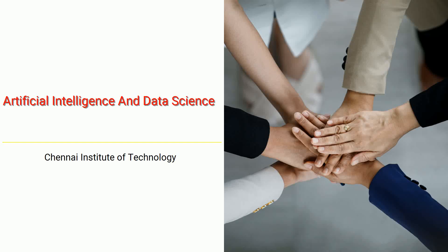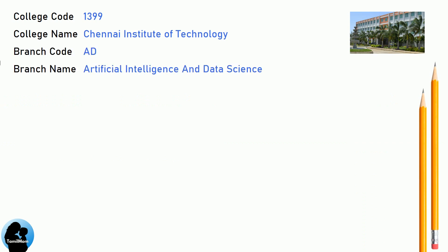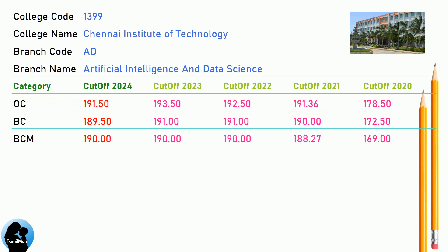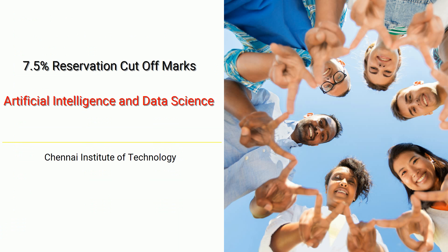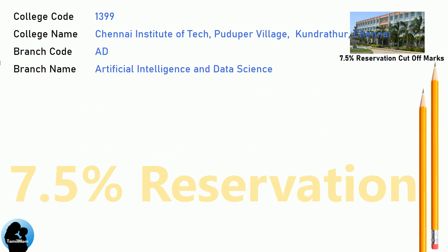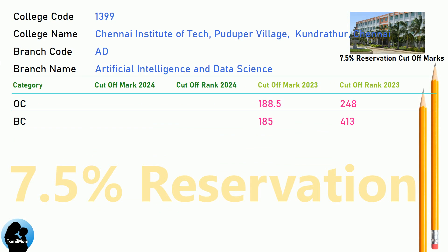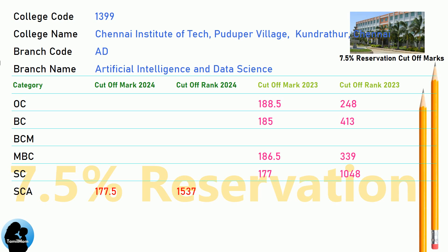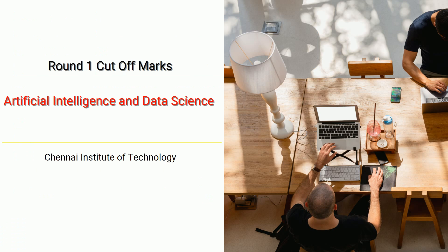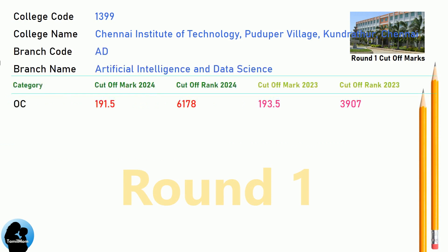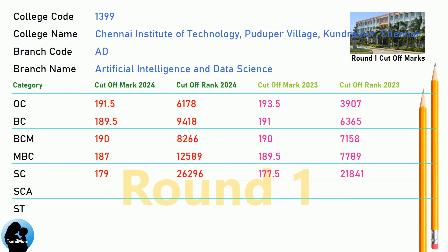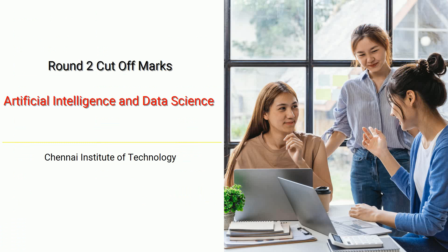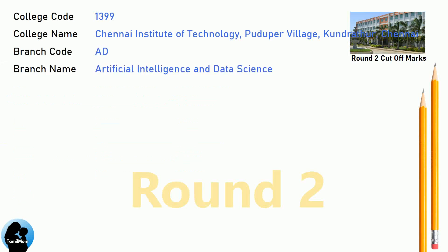DNA Cut-off for Chennai Institute of Technology in Artificial Intelligence and Data Science. DNA 7.5 Reservation Cut-off for Chennai Institute of Technology in Artificial Intelligence and Data Science. DNA Round 1 Cut-off and Round 2 Cut-off for Chennai Institute of Technology in Artificial Intelligence and Data Science.